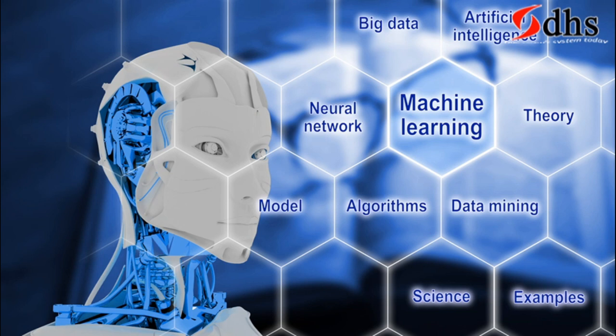We are seeing many titles: machine learning, neural network, data mining, artificial intelligence, big data — a lot of things. All these things have a common relation called knowledge engineering. Knowledge means data, engineering means intelligence — that is, data intelligence. With the help of data we create intelligent decisions. Under knowledge engineering we have data mining, data analytics, machine learning, artificial intelligence, and expert systems.